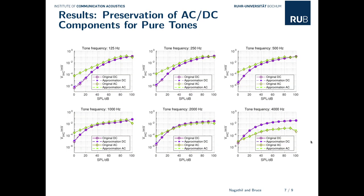We also tested the trained WaveNet model with pure tone signals, which were not part of the training data. These diagrams depict the amplitudes of DC and AC components in the resulting inner hair cell potentials for different tone frequencies and at different sound pressure levels, both for the original model and the WaveNet-based approximation. The approximation model closely emulates the behavior of the original model regarding the contributions of DC and AC components for pure tone input signals.